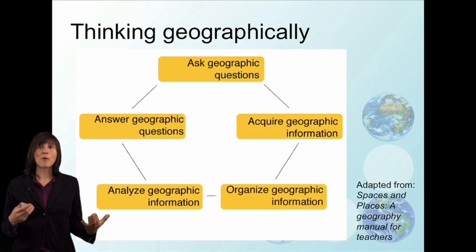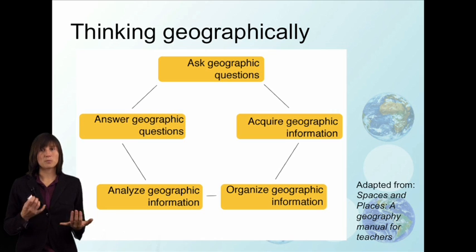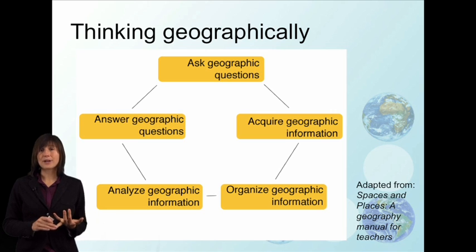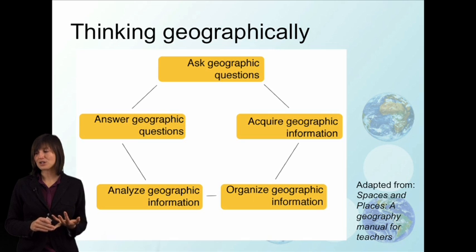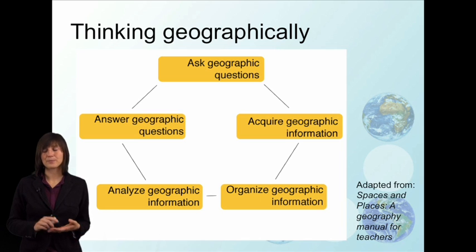Next, we want to think about what sort of information geographers use — data about locations, looking at the human and physical characteristics of different locations, and then trying to understand the conditions and activities of people who live in these places.